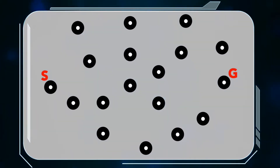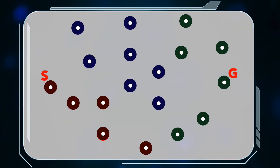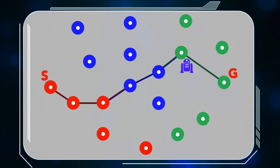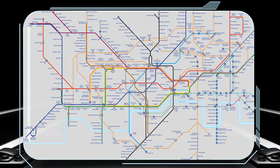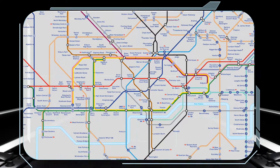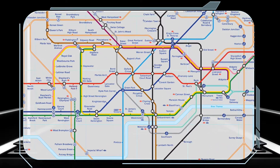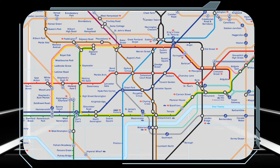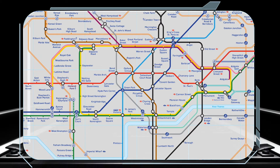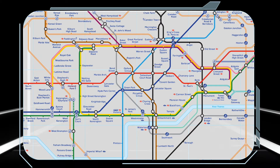One solution to this problem is to cluster states hierarchically. Take for example the problem of navigating in a subway network such as the London Underground. Subway networks tend to be organised hierarchically — states or stations are organised into lines or clusters. This reduces the complexity of planning in the network.